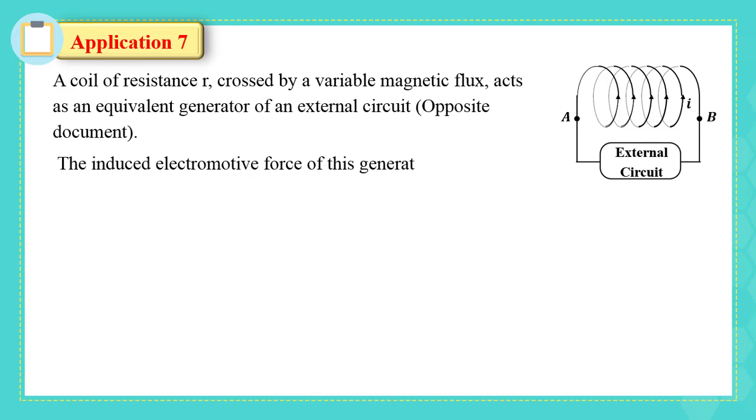Application 7. A coil of resistance R, crossed by a variable magnetic flux, acts as an equivalent generator of an external circuit opposite document. The induced electromotive force of this generator is 0.2 volt, and its total induced electric power is 0.04 watt.